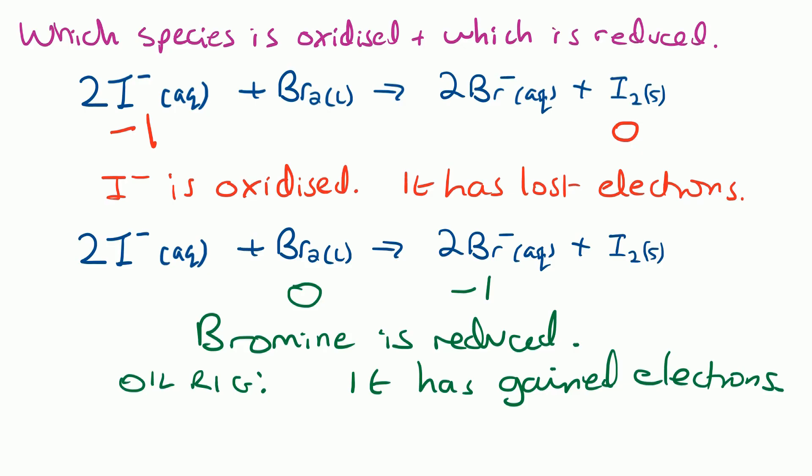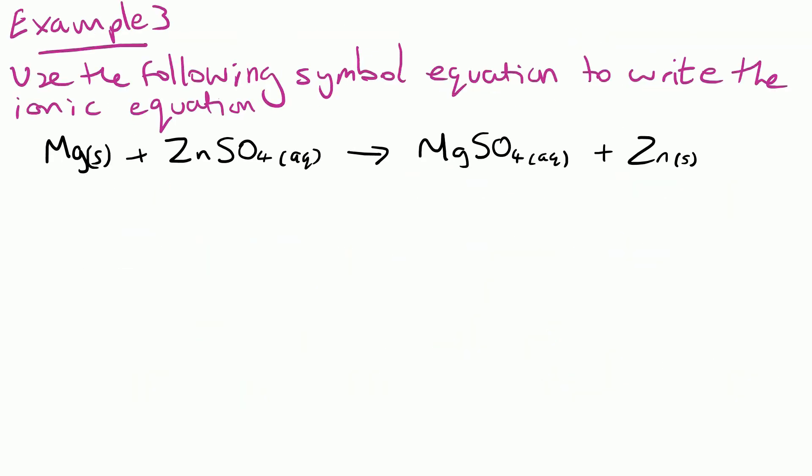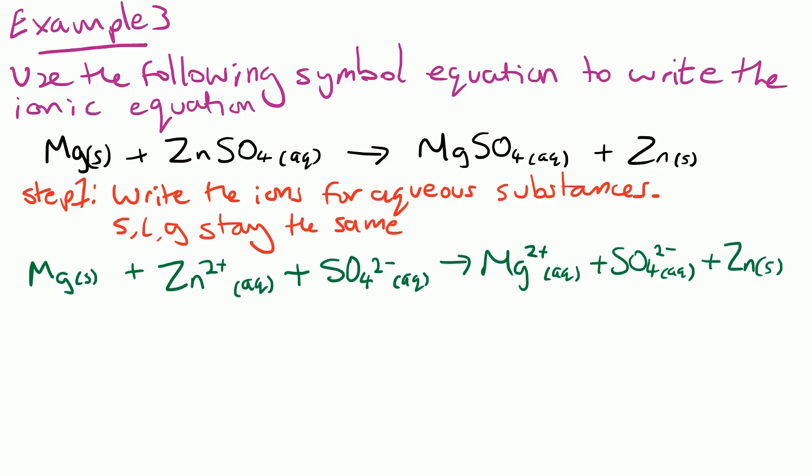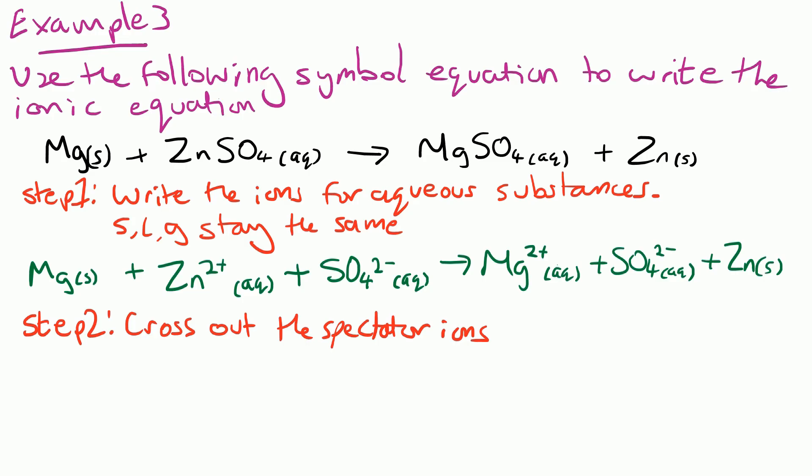Here's example three. We'll write the ionic equation: rewrite it with the ions for the aqueous substances showing, and solids, liquids, and gases stay the same. Zinc sulfate turns into Zn²⁺ and SO₄²⁻; magnesium stays as Mg(s). On the right-hand side we've got Mg²⁺ and SO₄²⁻ as the aqueous substance, and Zn stays as a solid. Step two: cross out the spectator ions, which in this case is the SO₄²⁻ — the sulfate ions. Then rewrite the equation, and this is the ionic equation we end up with.